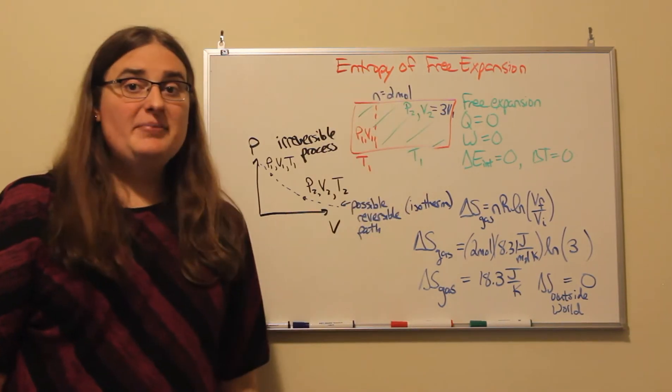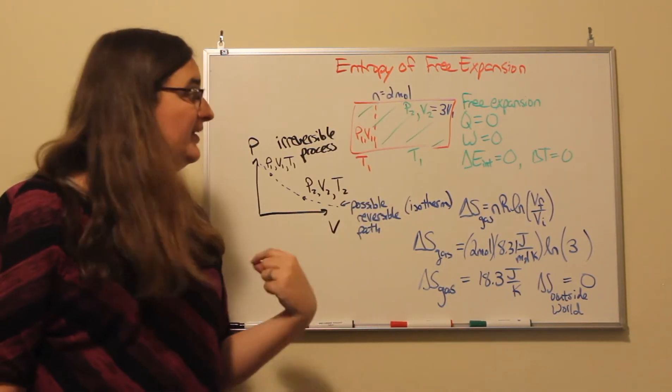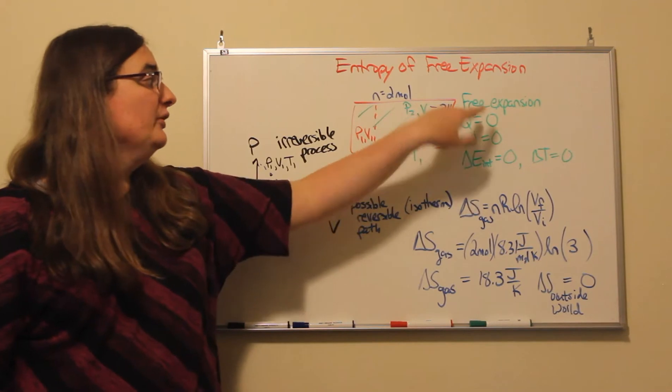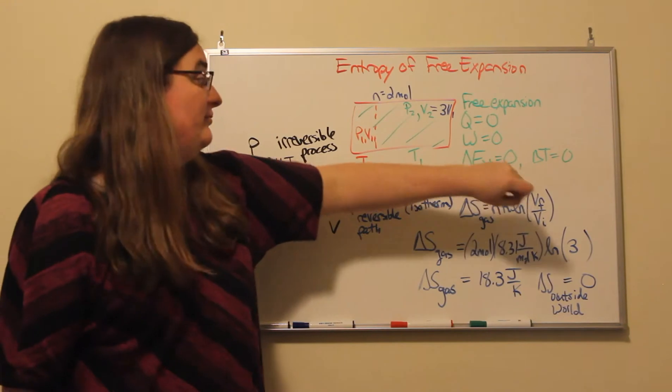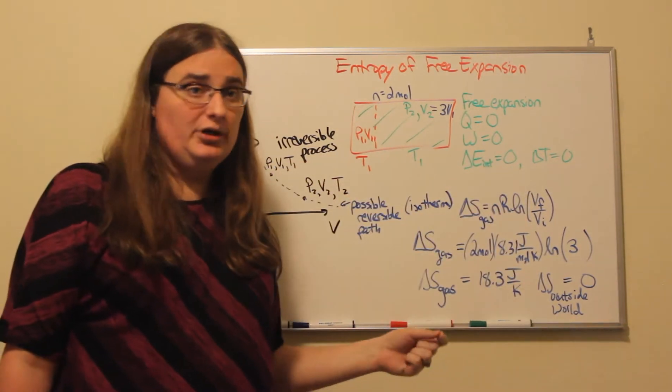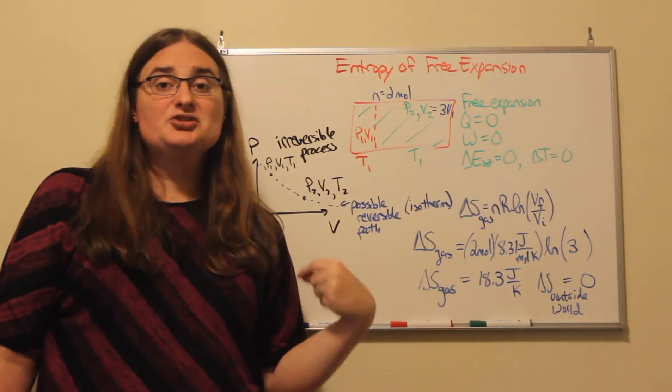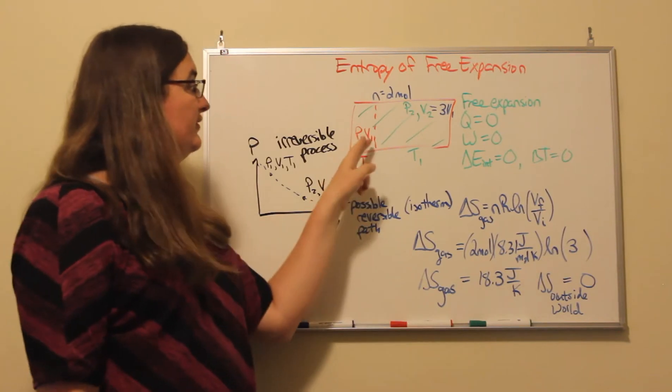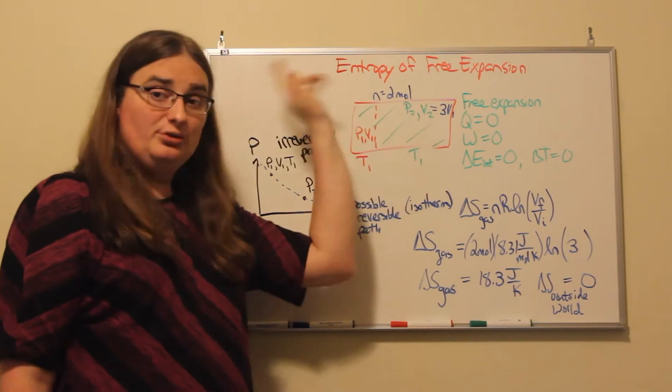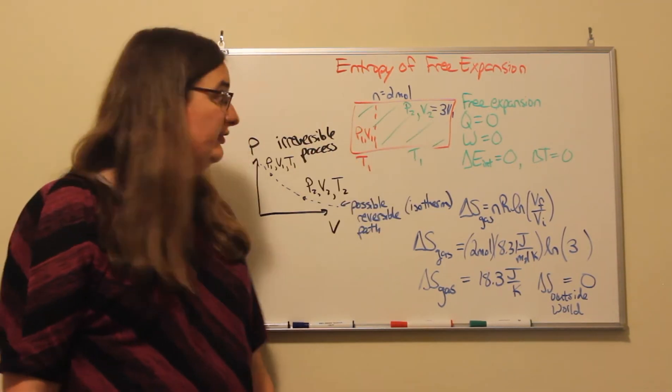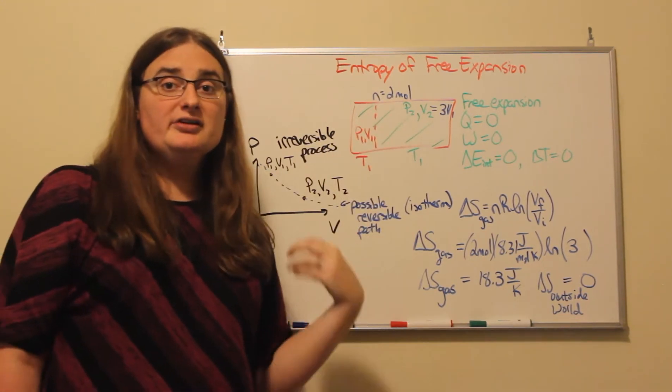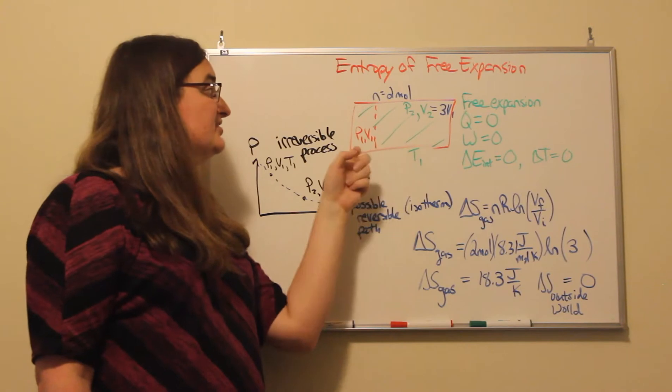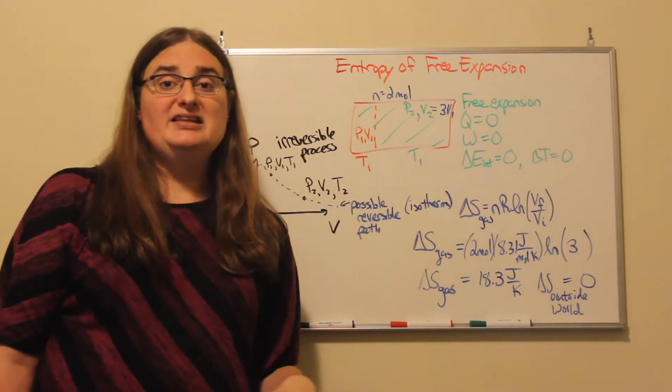It's an adiabatic process, so there's no heat being exchanged. If there's no heat and no work, the change in energy is zero. The temperature stays the same. So even though the volume might go to three times the initial volume, the pressure would end up going to one-third the initial pressure because the temperature remains the same.